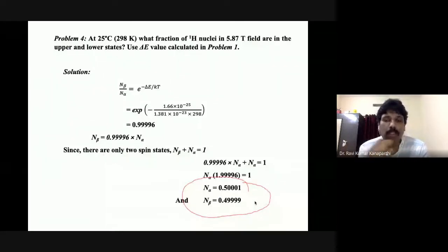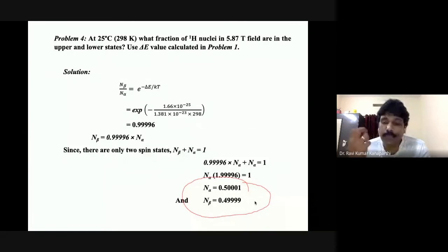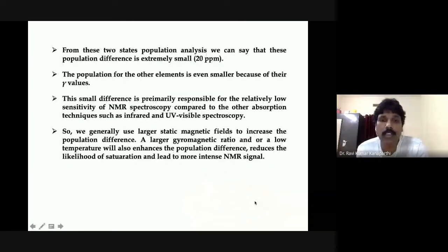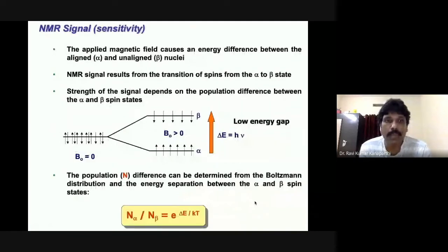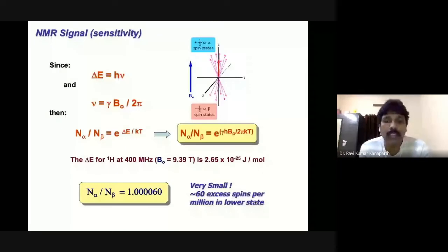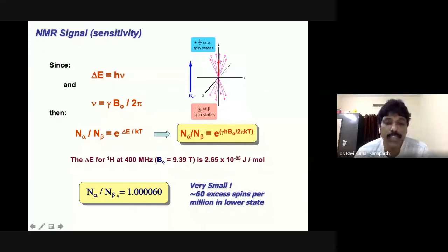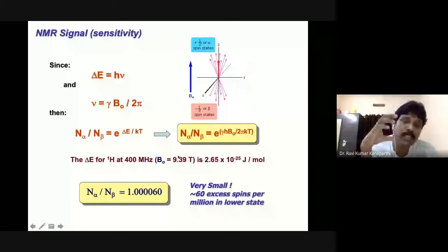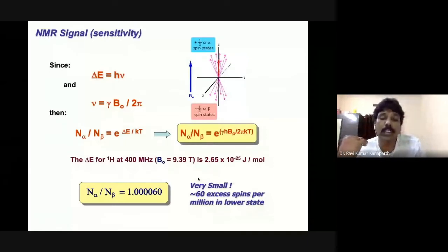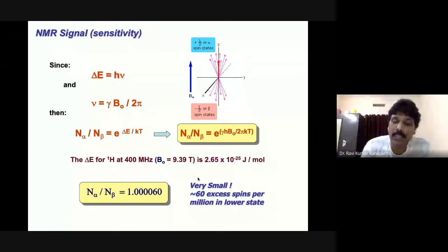Out of one million nuclei — ten lakh — almost everything is equally populated, but the difference is only about 20 nuclei in excess. This small number of 20 directly contributes to the NMR signal. Even though it is a small number, it is nowadays possible to record the signal with this small population difference. If you increase the field strength — say to 9.39 tesla — the population difference increases, and there will be about 60 nuclei in excess in the ground state.